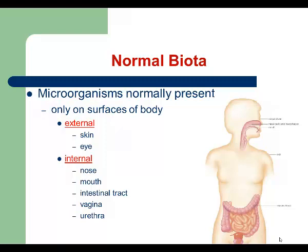Let's start with normal microbiota. Throughout our evolution, we developed an intimate and complex relationship with microorganisms. Hundreds of species of bacteria and fungi live on our surfaces — some of them permanently, others just temporarily. Even when we are healthy, the number of microorganisms living on our surfaces is ten times greater than the number of human cells we are made of.